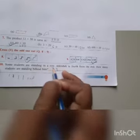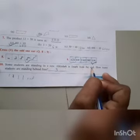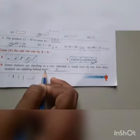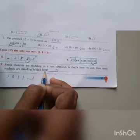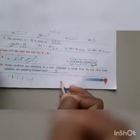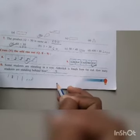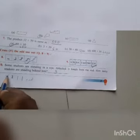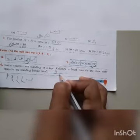Children, some students are standing in a row. Abasic is fourth from the end. How many students are standing behind him? He is fourth from the end, so counting from the end: 1, 2, 3, and he is fourth. So there are 3 students behind him. The answer is 3.